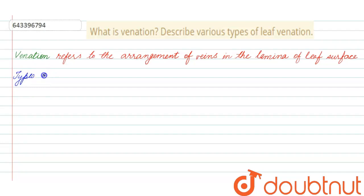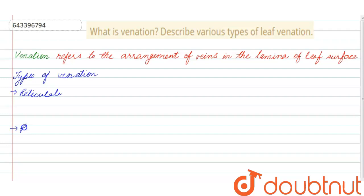Now we'll be talking about types of venation. In general, we study two types of venation: the first one is reticulate venation, and the next one is parallel venation.